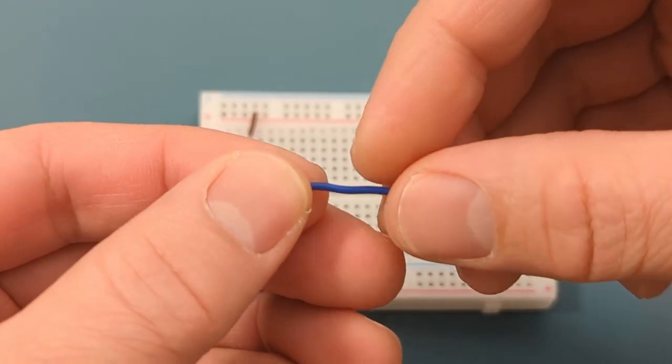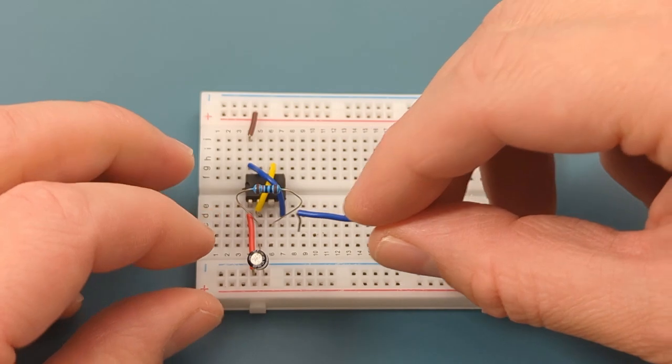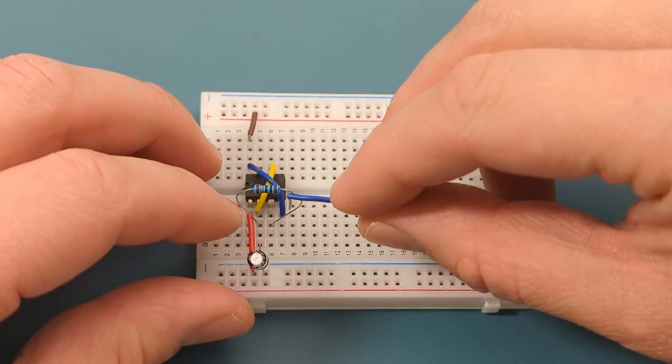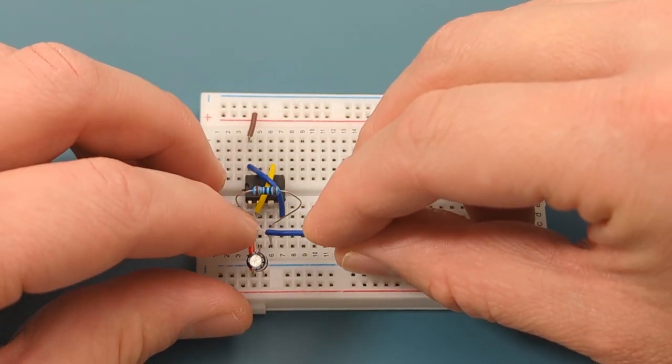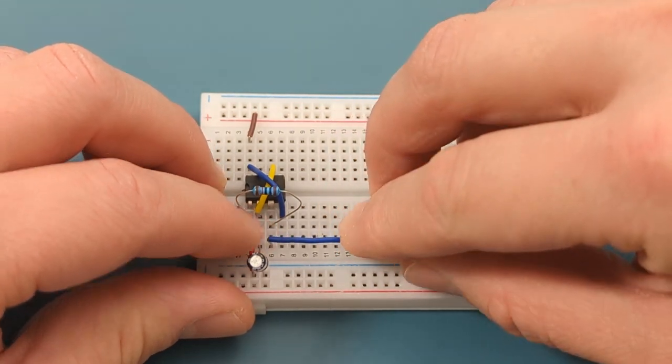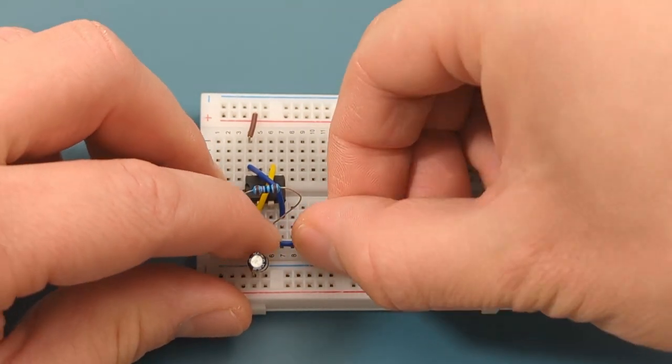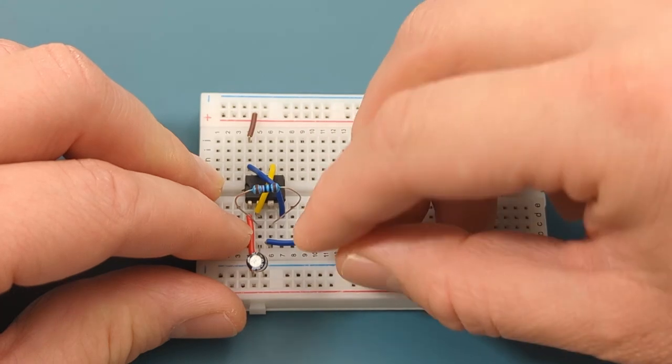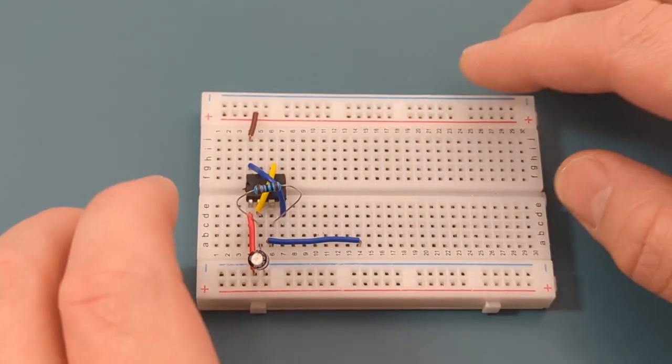Insert a jumper wire from pin 3 or output to several rows below the IC. In this circuit, the other end of the jumper wire is connected to row 14. Turn the breadboard back to the vertical position.